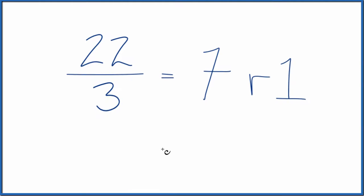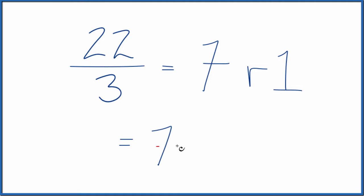To write this as a mixed number, we write 7 and then we write the remainder over the original denominator, which is 3. So the fraction 22 thirds, that's equal to the mixed number 7 and 1 third.